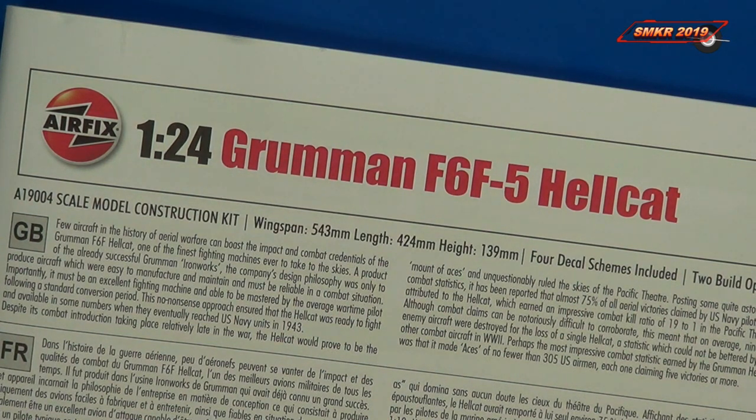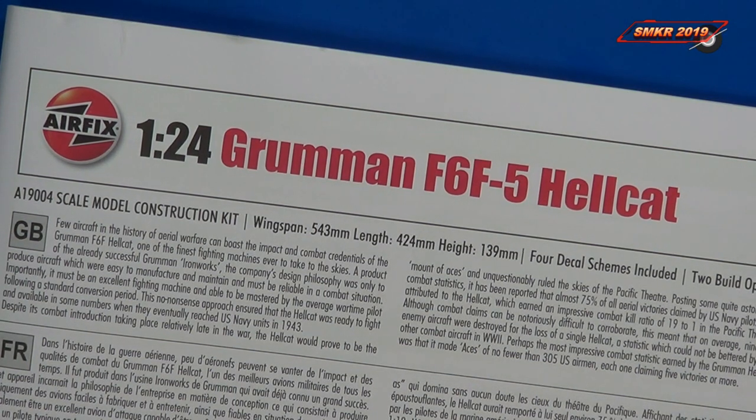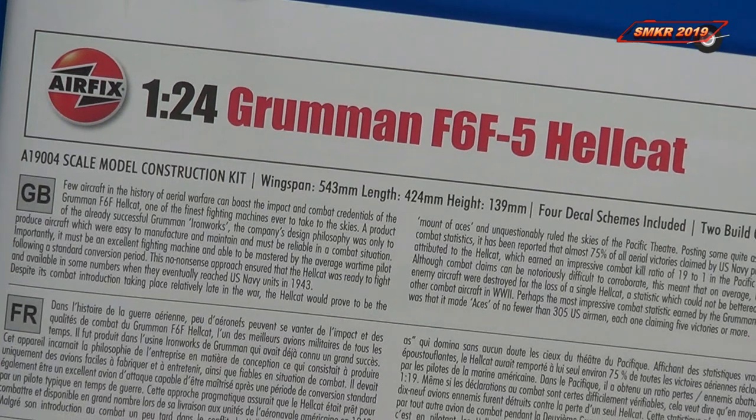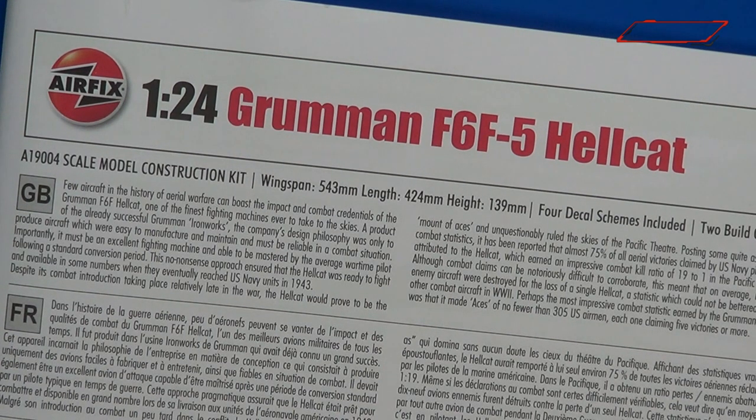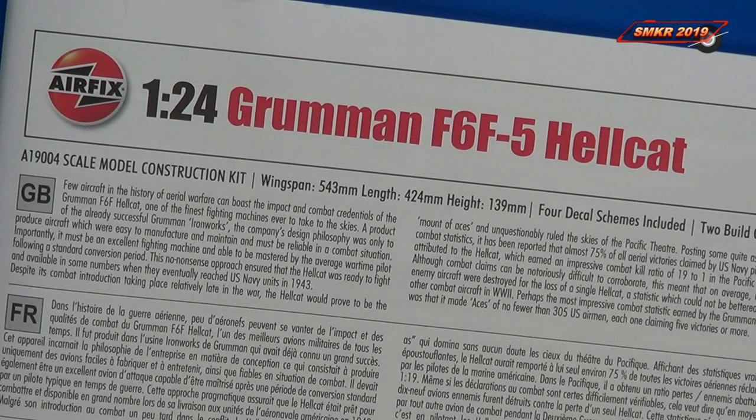That was the Airfix 1:24 scale Grumman F6F-5 Hellcat kit. Just remember that a lot of the parts have very close tolerances. So be careful what you decide to paint and what you want to keep open, so that your fuselage halves will come together, your wings will come together, and all the engine components will fit in just as they should. Once you start painting this stuff, it can take everything and throw it out of whack and give you some trouble. So just remember that. And have fun with the kit. Happy modeling everybody.